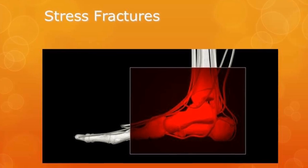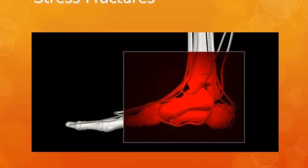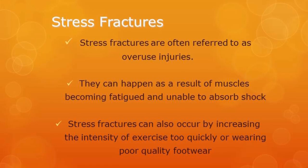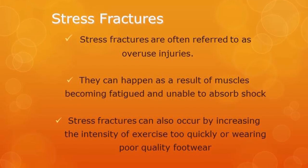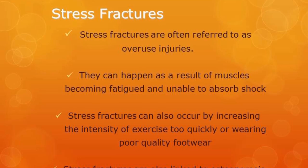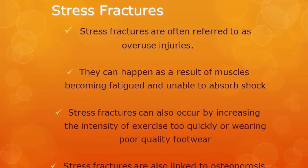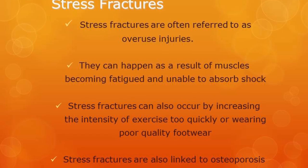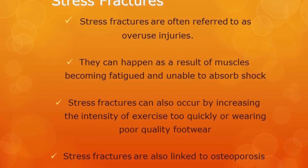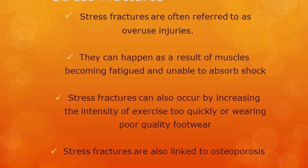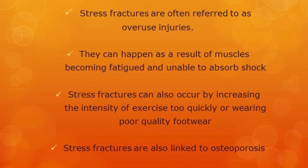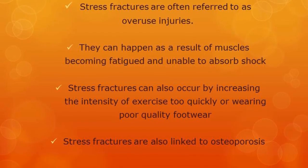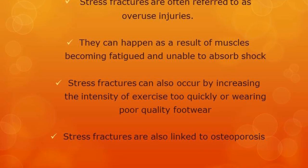Stress fractures are often referred to as overuse injuries because they can happen as a result of the bone becoming fatigued or unable to absorb shock. If you're constantly doing the same exercise, such as running, you might get shin splints, which could lead to a stress fracture. They can also occur from increasing the intensity of exercise too quickly or wearing poor quality footwear. Stress fractures are sometimes also linked to osteoporosis.